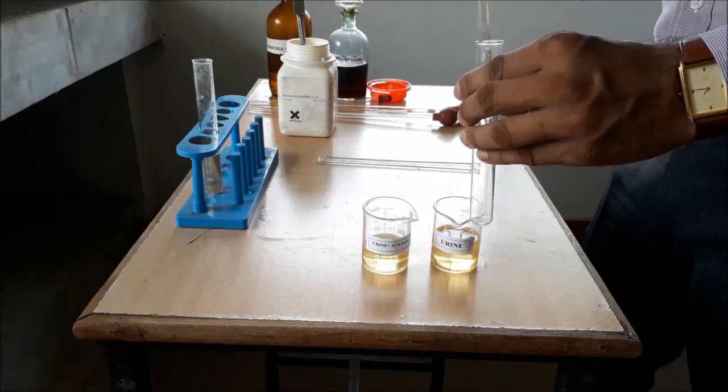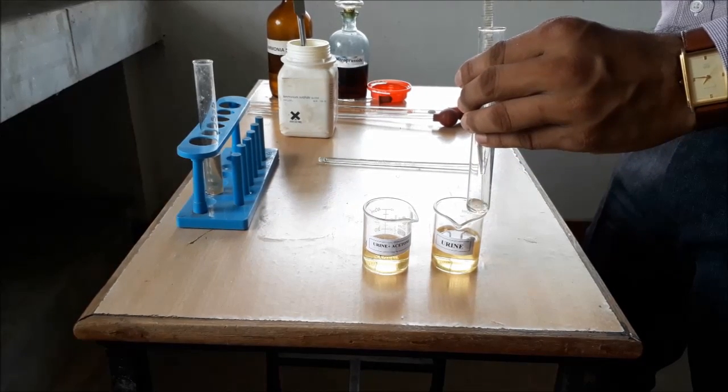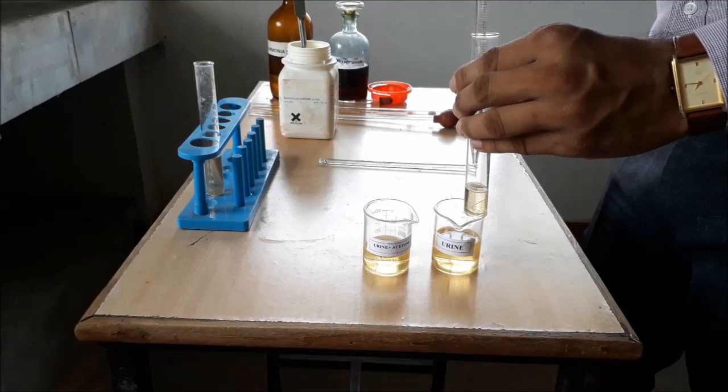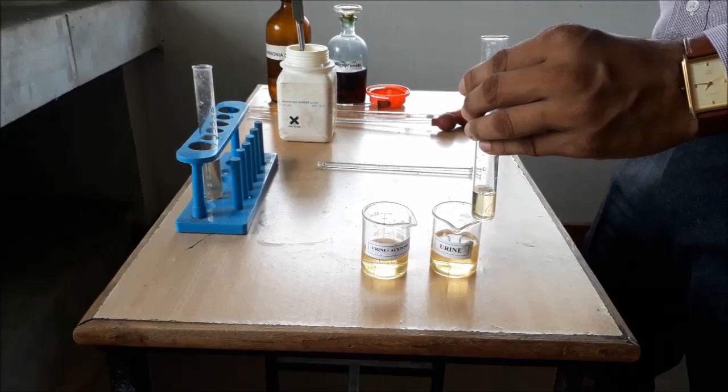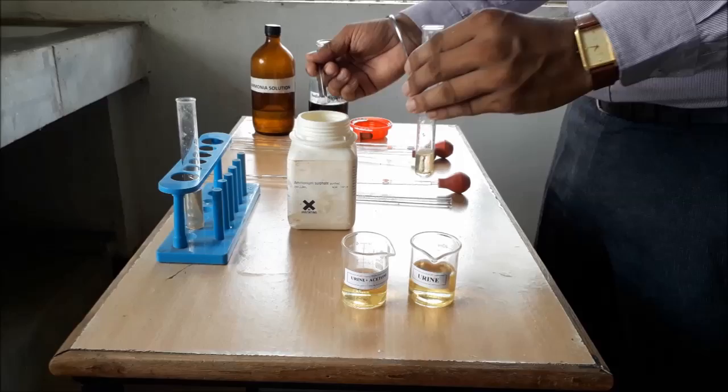Welcome friends. Today we will determine ketone bodies in a given sample of urine. To perform this experiment, pipette out 5 ml of normal urine sample of any individual and transfer it into a test tube.